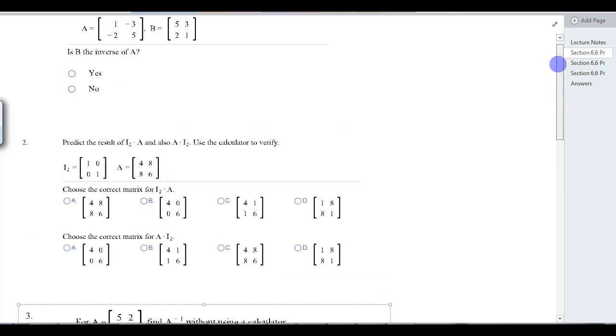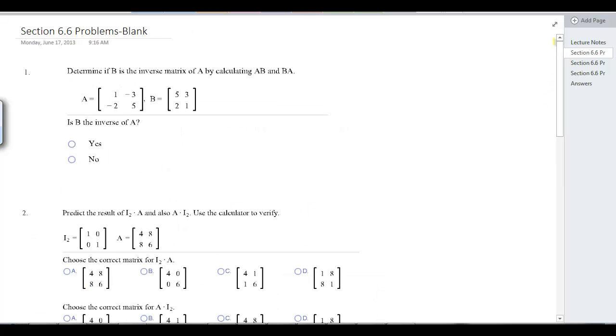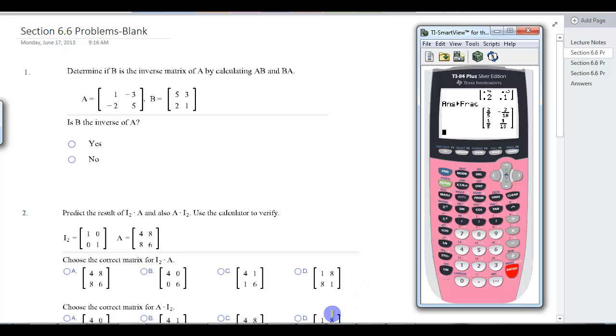There aren't very many, about six, to practice. Number one says determine if B is the matrix, the inverse of A. So the easiest way to do that would be to put A in and do A inverse and see if you get this. Or you could multiply these two together and see if you get the identity. But let's just do this the easy way.